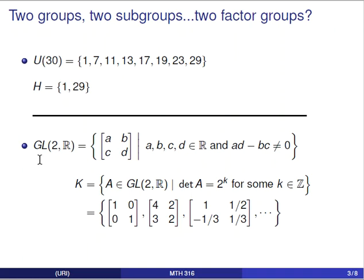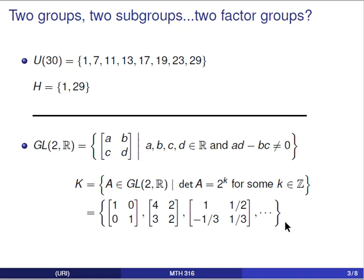The second group is the general linear group of 2 by 2 matrices with entries from the real numbers. This is the set of all 2 by 2 matrices with real entries, and because it's in the general linear group, the determinant is non-zero — recall the determinant of a 2 by 2 matrix is AD minus BC. The subgroup K is defined as the set of all matrices in GL(2,R) that have determinant equal to 2 raised to some integer power. For example, the identity matrix is in K because its determinant equals 1 = 2^0, and there are infinitely many elements in K.